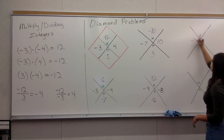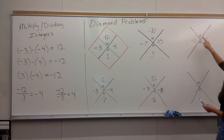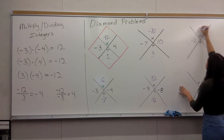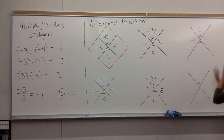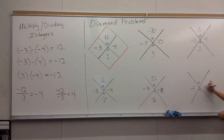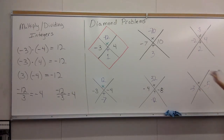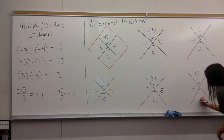I'm going to choose negative two and four. Negative two times four is negative eight, and negative two plus four is two. Down here I'm going to choose two negative numbers — negative three and negative five. A negative times a negative equals a positive, giving us 15. And negative three plus negative five gives us negative eight.